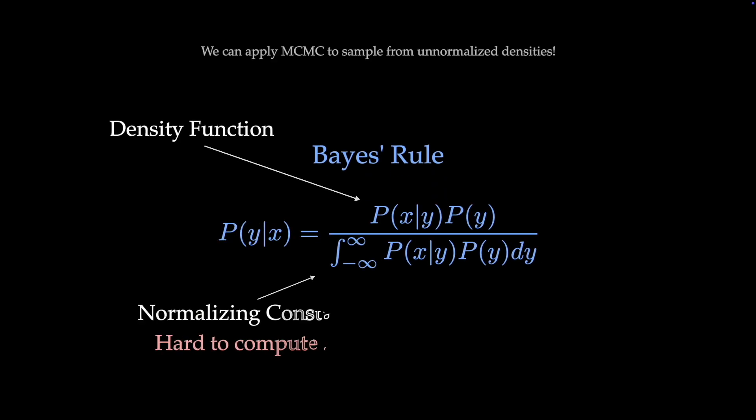Therefore, we can apply MCMC to sample from un-normalized densities. And it turns out, being able to do this gives us great power. For example, the famous Bayes rule is often written with a hard-to-compute integral in the denominator. MCMC allows us to sample from the posterior distribution without having to compute this denominator.